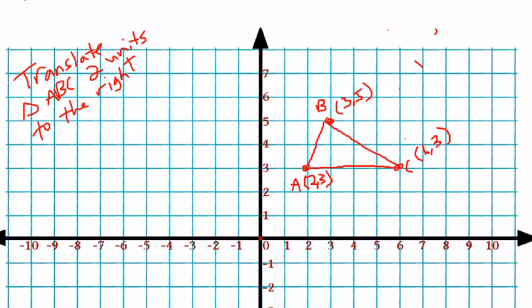Okay, so starting at point A, I'm going to move one, two units to the right. So this will be the location of my new A coordinate. And we're going to call this A prime. And I used that little apostrophe-looking symbol to represent that. A prime simply represents the new location of point A after I've translated it.